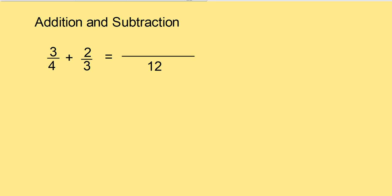You learned addition and subtraction in class 6. Now let us have a recap on it. Add 3 by 4 and 2 by 3. For that, first find out the LCM of 4 and 3. LCM of 4 and 3 is 12. So take 12 as common denominator.